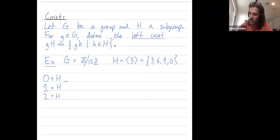So to get 0 plus H, I just combine 0 additively with each element in the subgroup. So 0 plus 3 is 3, 0 plus 6 is 6, 0 plus 9 is 9, and 0 plus 0 is 0.